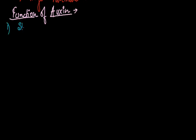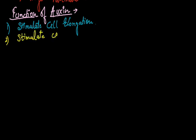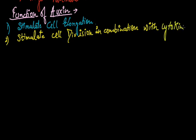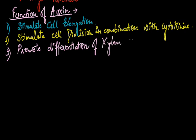Now we will discuss the function of auxin, which is the most important part. The first function of auxin is they stimulate cell elongation. That is, with the influence of auxin, a cell increases in their size lengthwise. Next, they stimulate cell division in combination with cytokinin. It promotes differentiation of xylem and phloem.